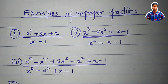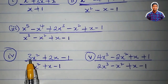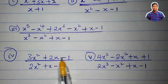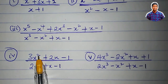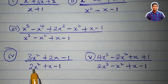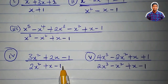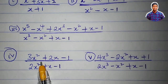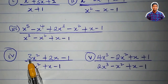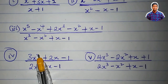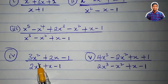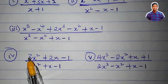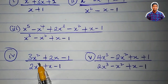Let's use the leading coefficient now to determine if a fraction is proper or improper. Here I have 3x squared plus 2x minus 1 at the numerator. The degree is 2. At the denominator, we have 2x squared plus x plus 1. The degree is also 2. Both degrees are the same — is this improper? Yes, it is improper. The coefficient of x squared in the numerator is 3; at the denominator it is 2. Since 3 is greater than 2, this fraction is improper.